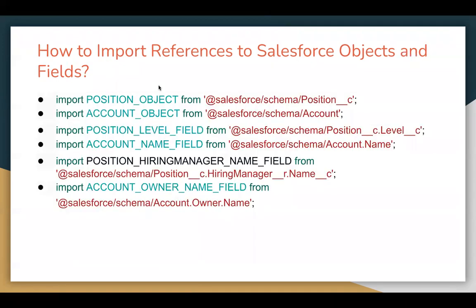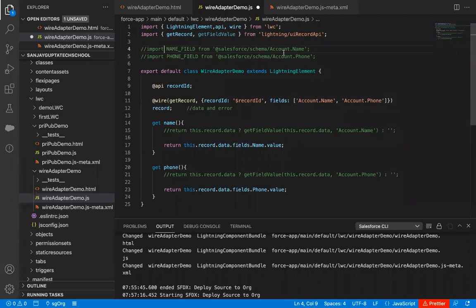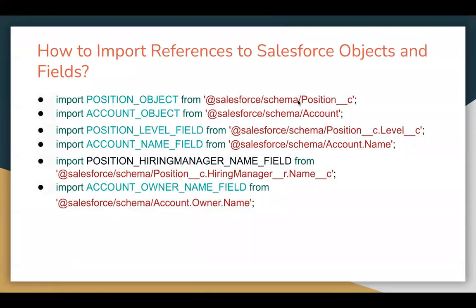Now if you want to see other examples — can we import custom objects? In this example we imported standard objects and standard fields. If you want to import a custom object reference, you can do that like position underscore underscore C. If you want to import a standard object you can do that, and you can have a custom field like position underscore underscore C dot label underscore underscore C. So the label field reference will be imported. Then account dot name we already saw. And if you want to use a relationship field, that is also possible — custom as well as standard. So this way you can import references to objects and fields, whether standard or custom, and you can use relationship fields as well.